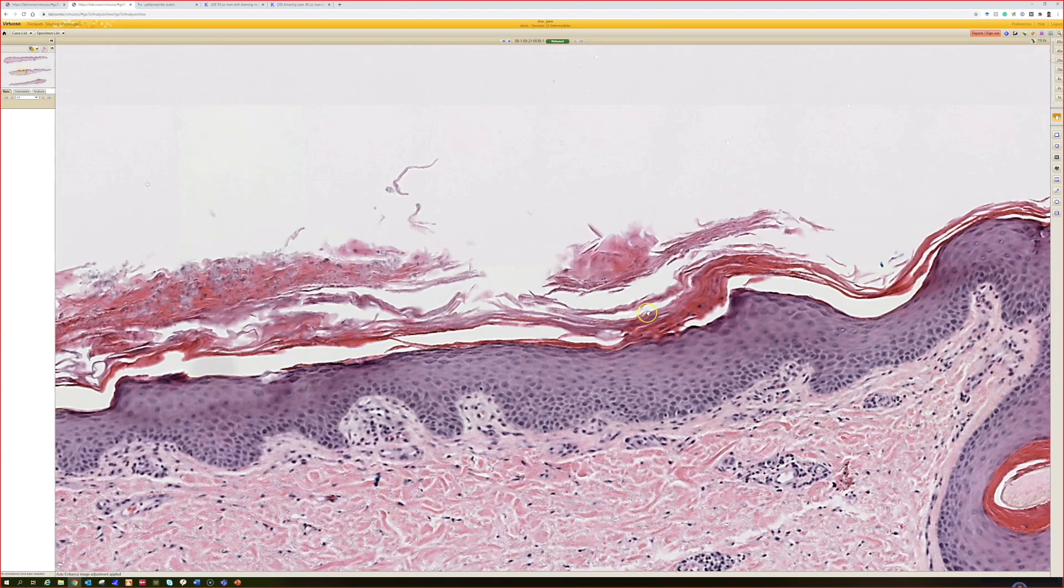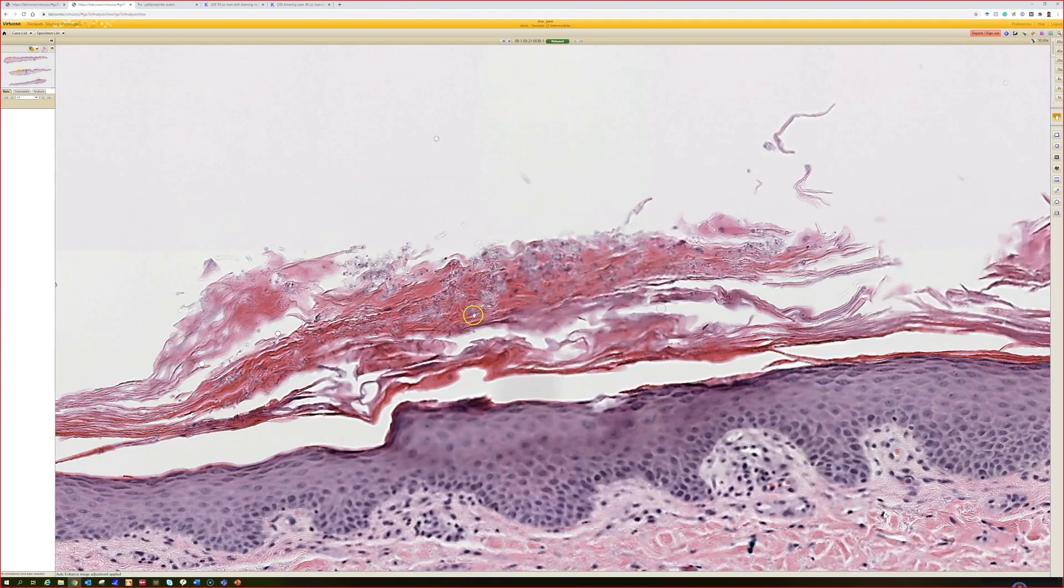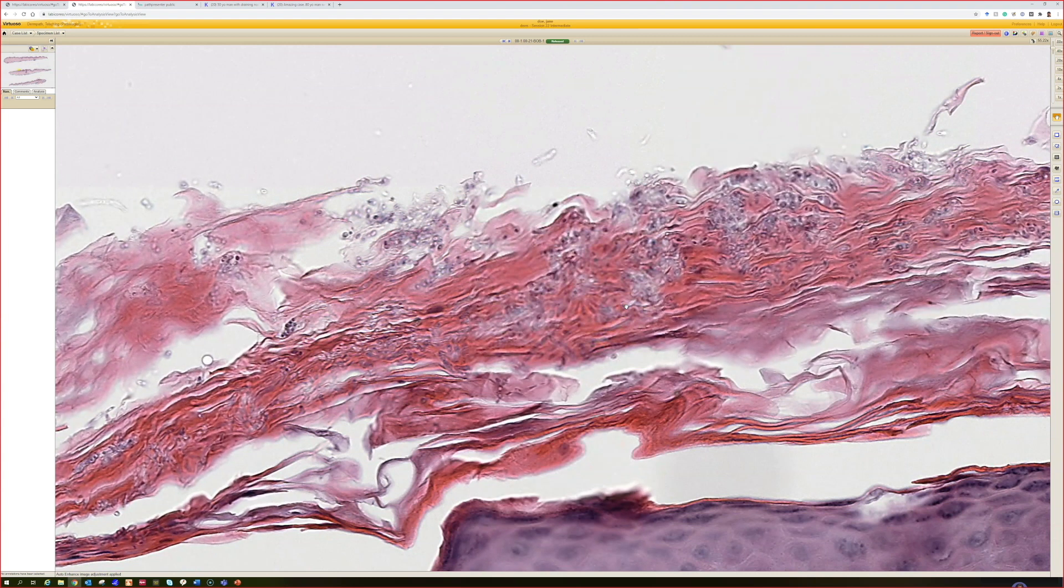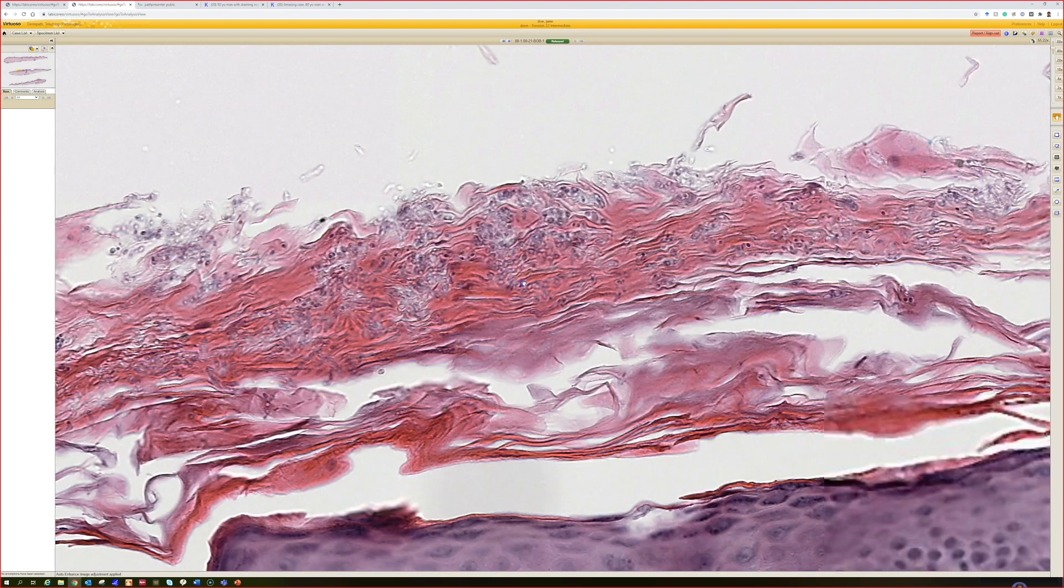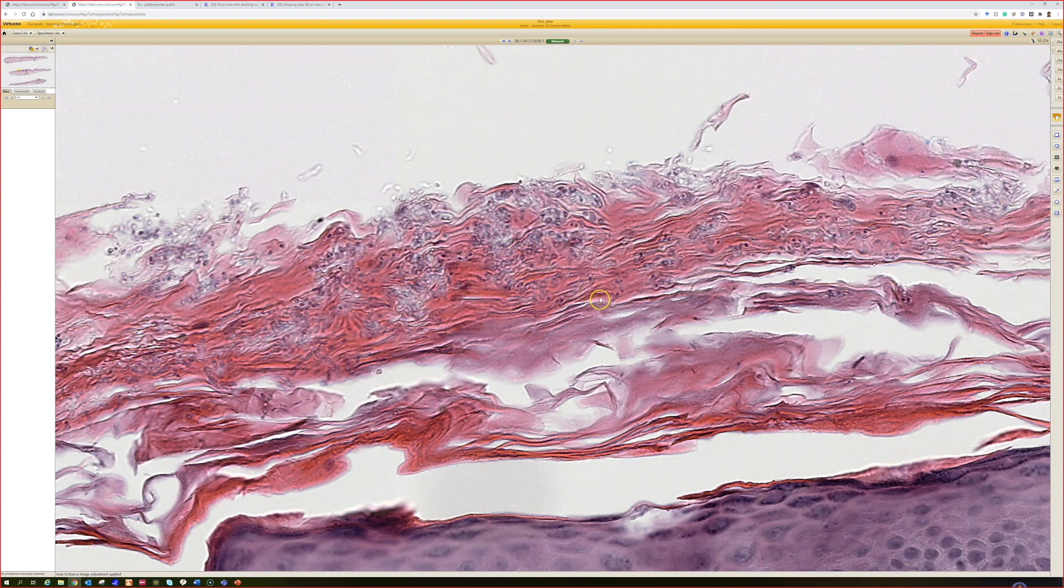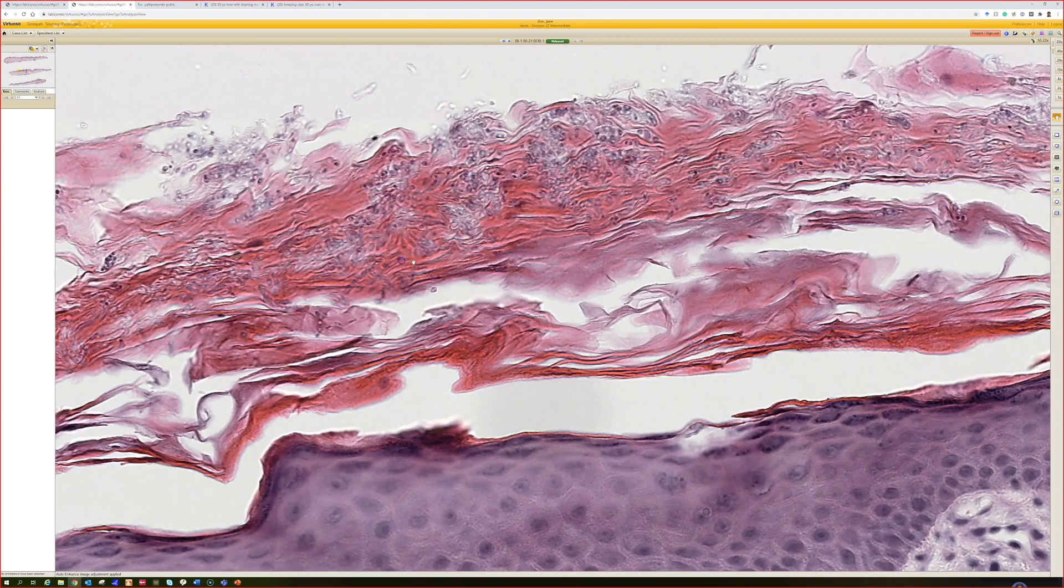When I went in really close on those mounds of ortho hyperkeratosis, I could see some little organisms like spaghetti and meatball. A little short hyphae, kind of that bluish color that you were talking about, so it's tinea versicolor. Yeah, exactly.